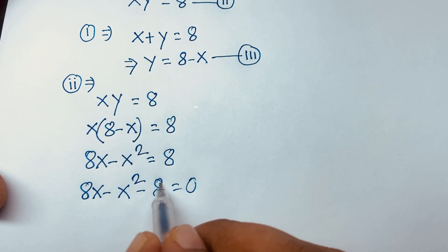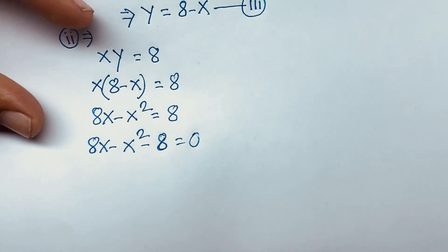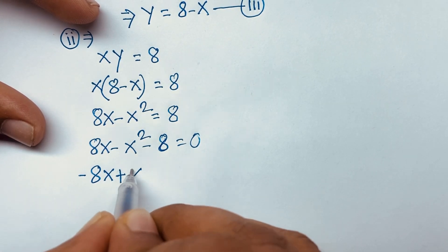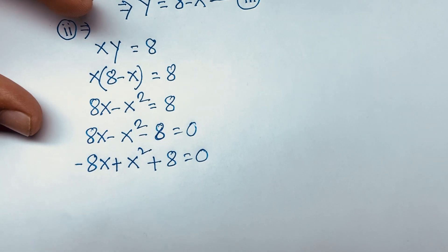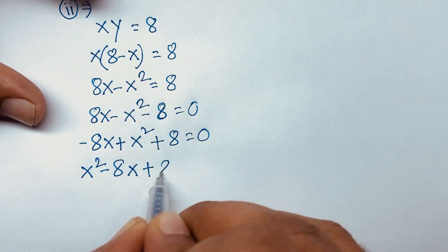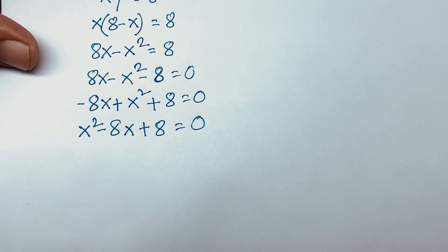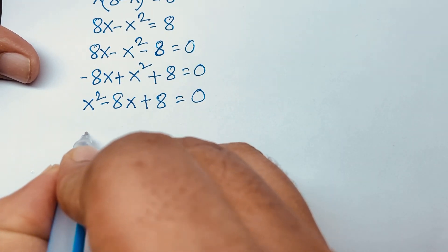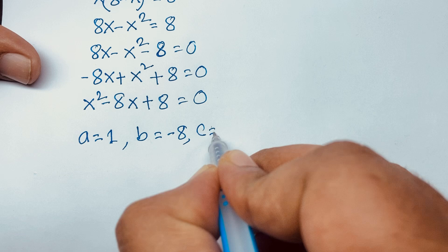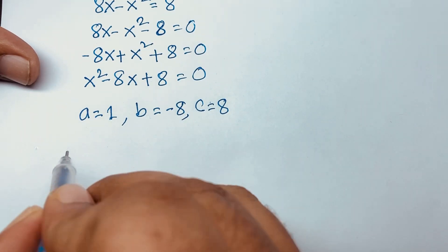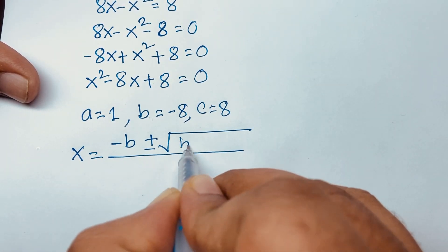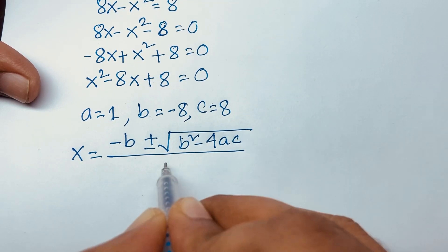Taking out the minus as common, it becomes minus 8x plus x squared plus 8 is equal to 0, which gives us x squared minus 8x plus 8 is equal to 0. This is a quadratic equation where a is equal to 1, b is equal to minus 8, and c is equal to 8.